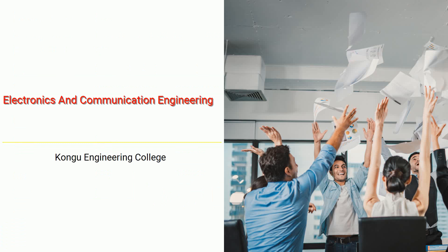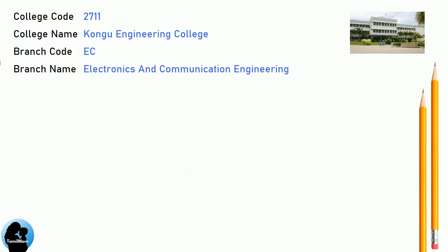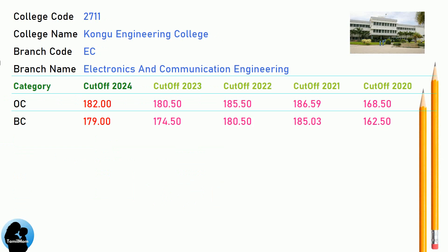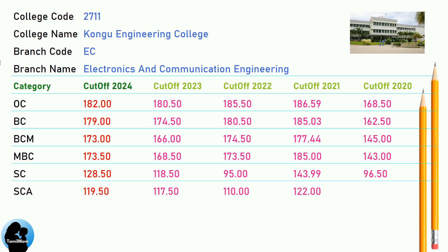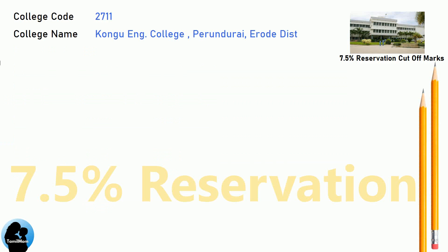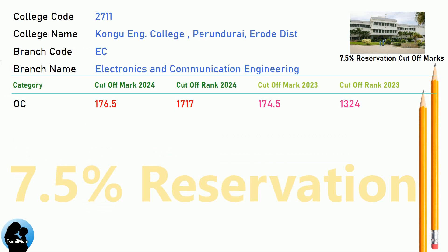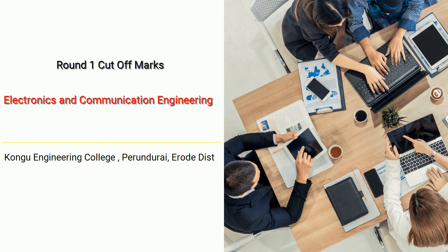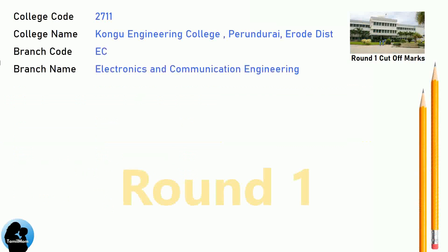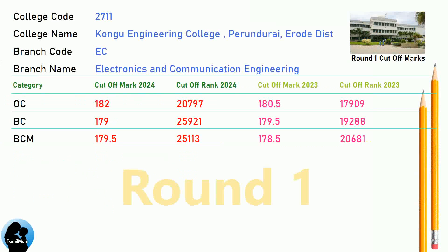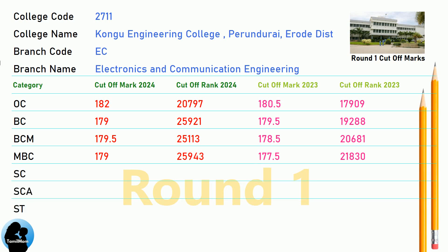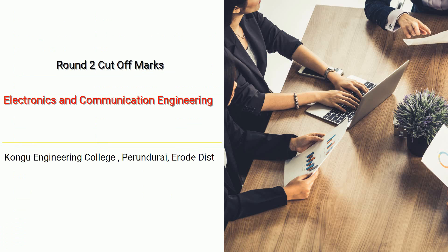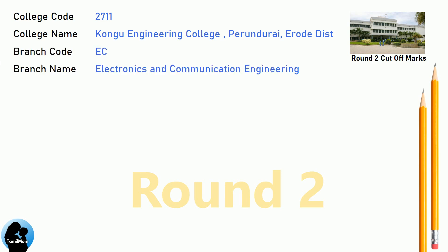DNA cutoff for Kongu Engineering College in Electronics and Communication Engineering. DNA 7.5 reservation cutoff, Round 2 cutoff for Kongu Engineering College in Electronics and Communication Engineering.